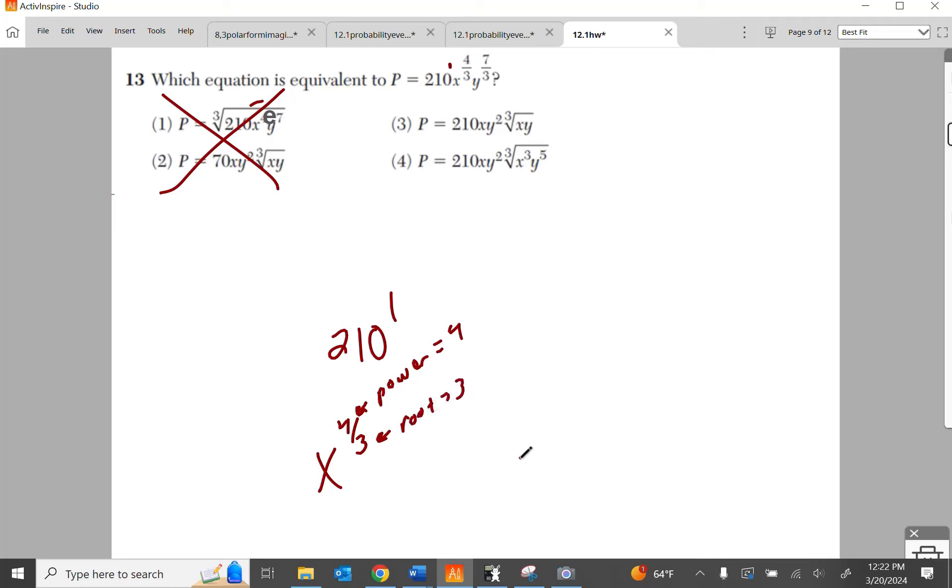Now, you talk about x to the 4 thirds. We have a power of 4 and we have a root of 3. So you might be thinking, cubic root of x to the 4th. 3 enters 4 one time. 1x outside. 3 enters 4 once. Think about this. 4 divided by 3 is 1 with a remainder of 1. 1x inside.